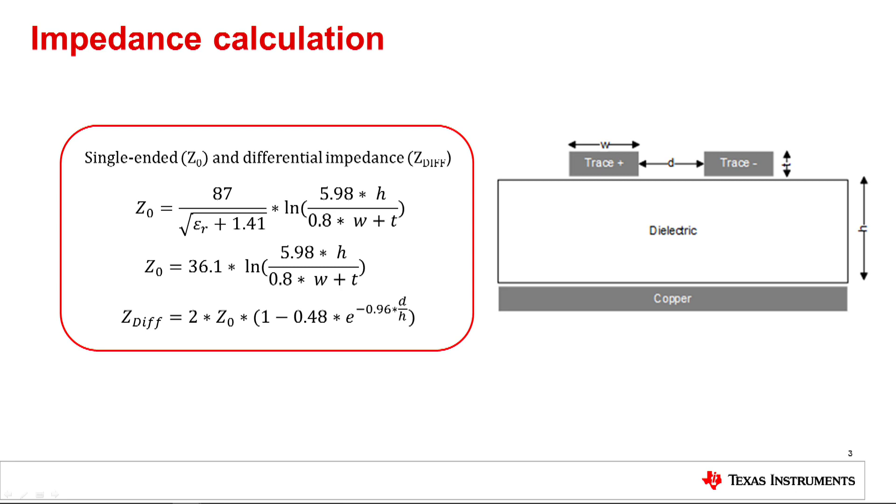Differential impedance, Z diff, is less than twice the single-ended impedance, Z naught. The differential impedance depends greatly upon trace spacing in microstrip applications. The smaller the differential pair spacing, the lower the differential impedance.